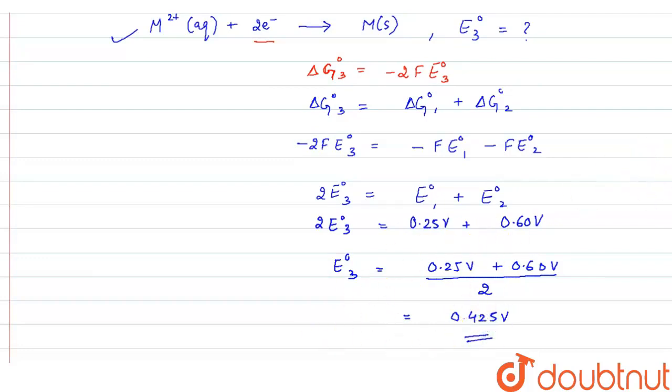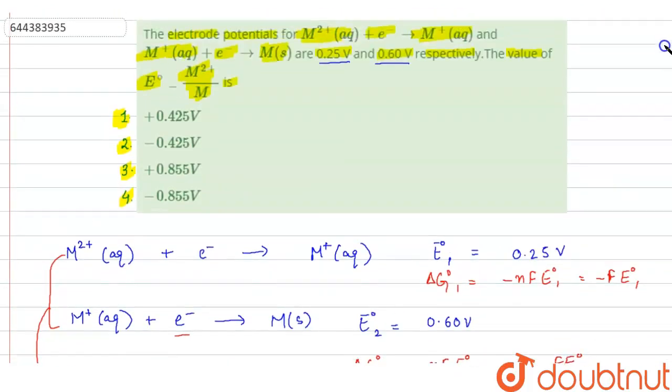So this is the electrode potential for M²⁺ to M. So 0.425 volt is given in option 1. So here option 1 is the correct option. So option 1 is the answer. Thank you.